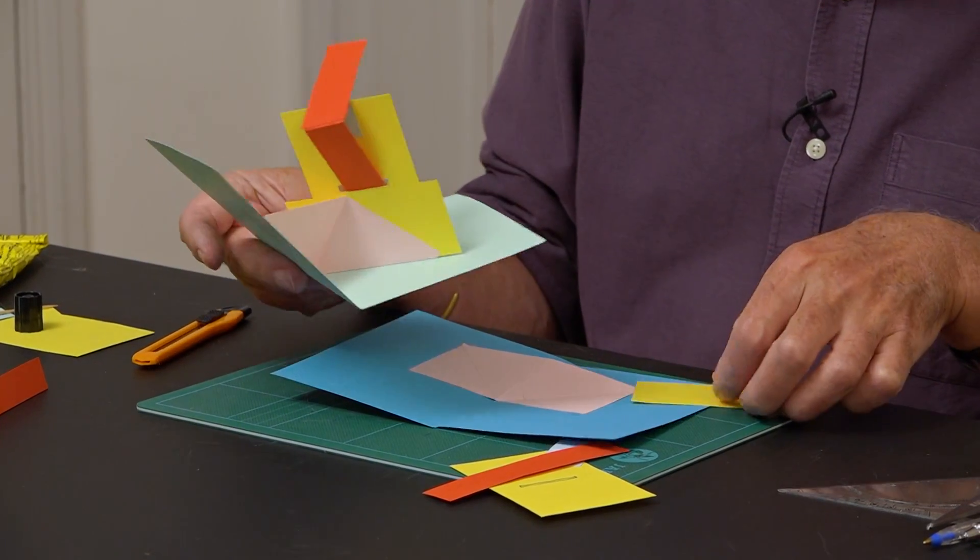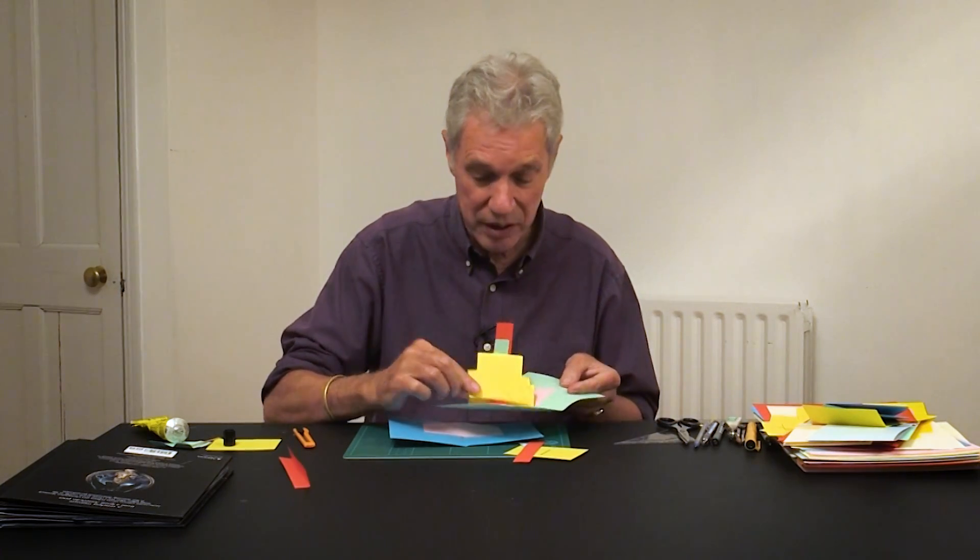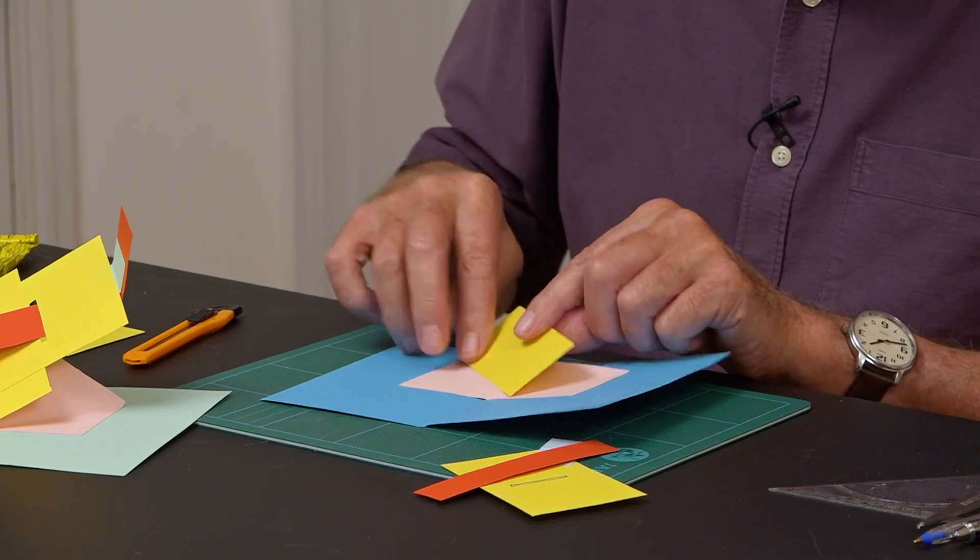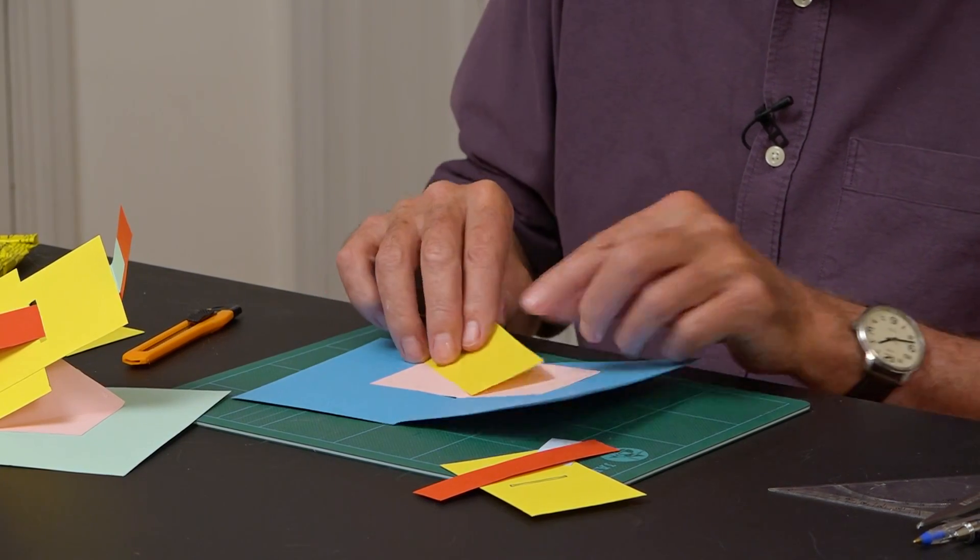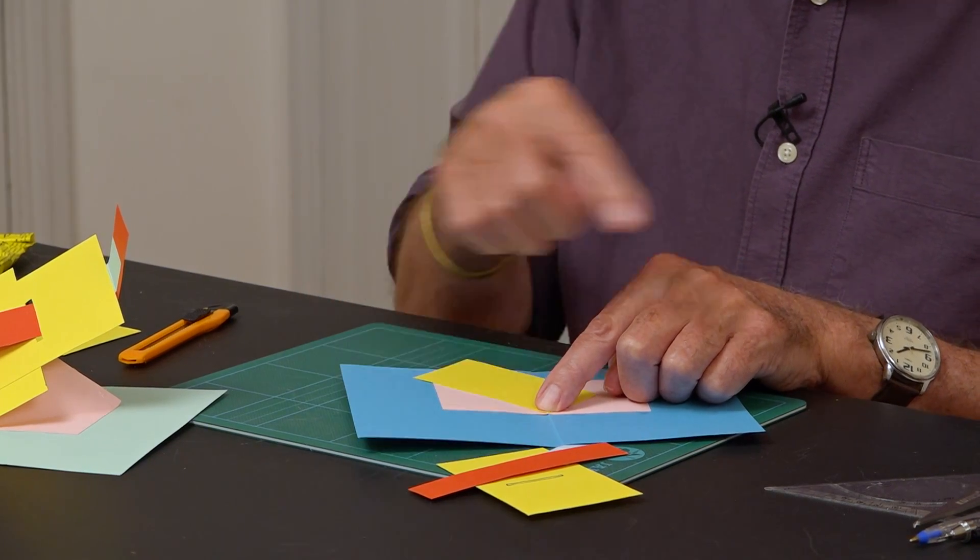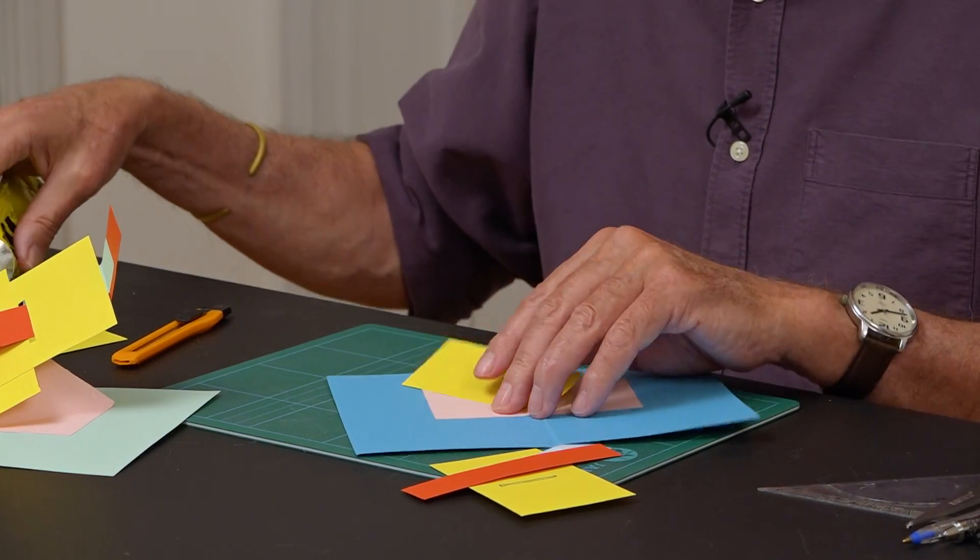So here's the yellow piece, that low yellow piece. And it's going to be glued to this side of the V-fold. Make sure the corner is right in the corner. Otherwise, well, obviously it won't close properly.